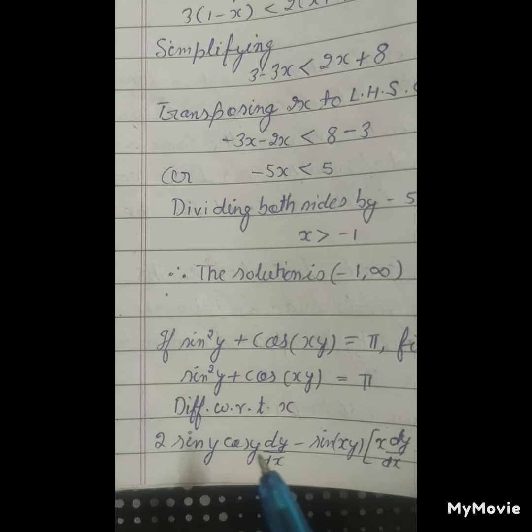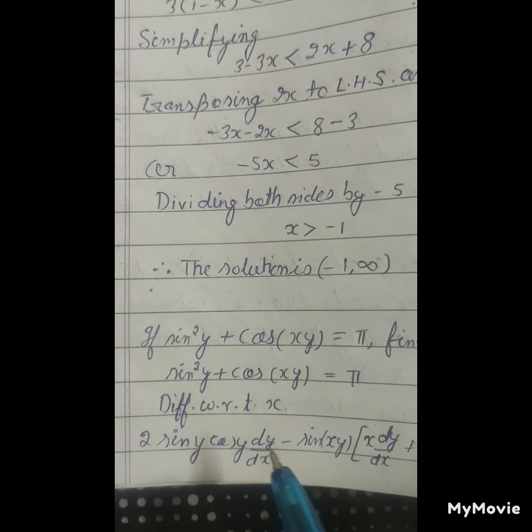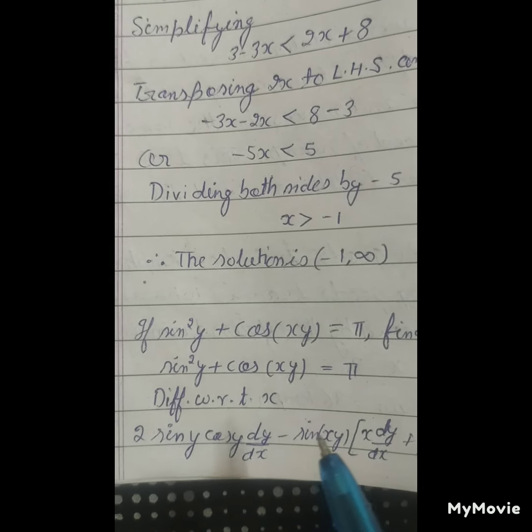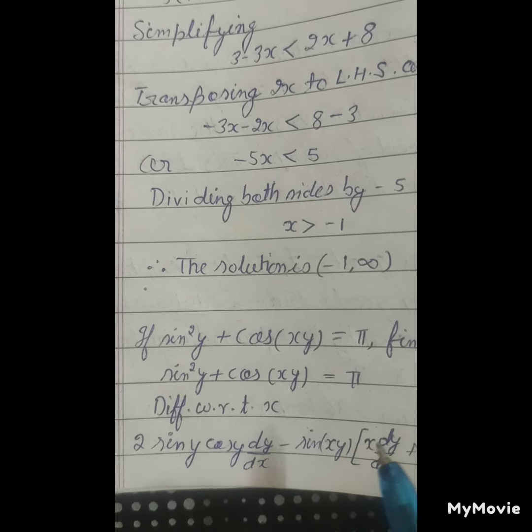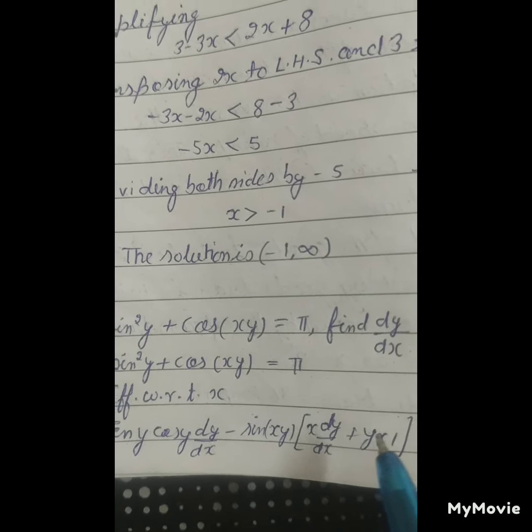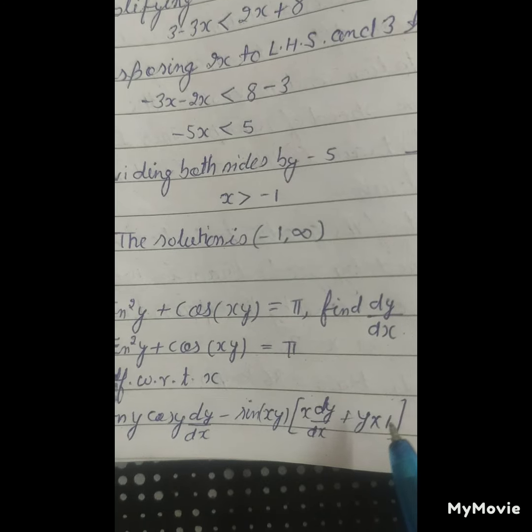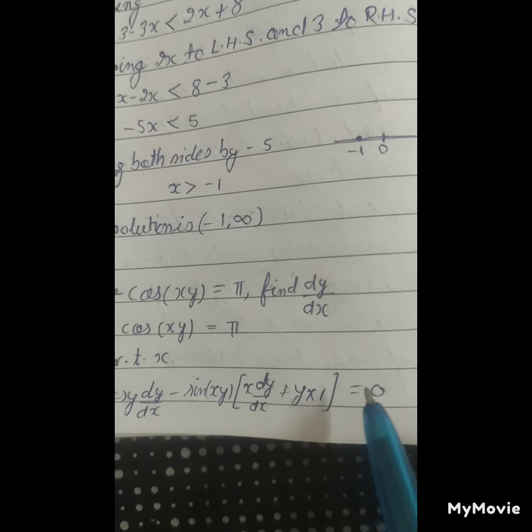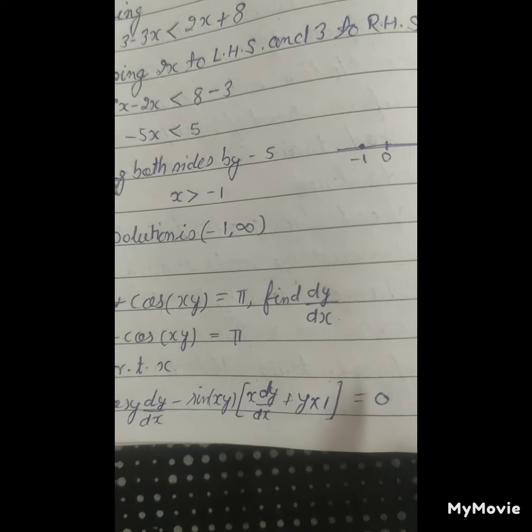Differentiation of sine y is cos y dy upon dx. Minus cos xy, differentiation is minus sine xy. So x as it is dy upon dx plus y as it is, differentiation of x is 1, equal to pi. Differentiating is 0.